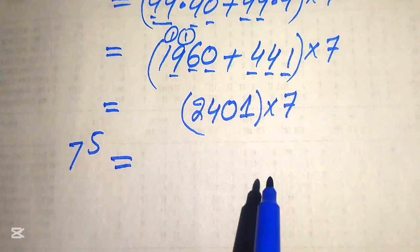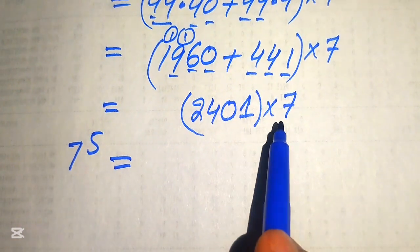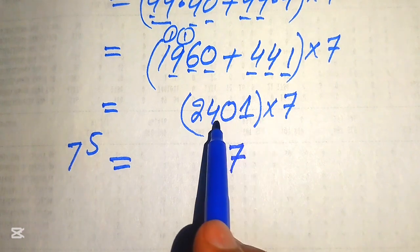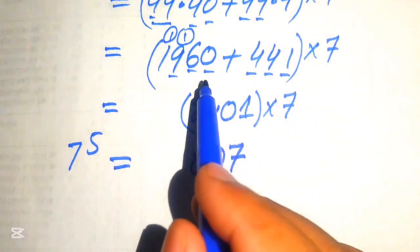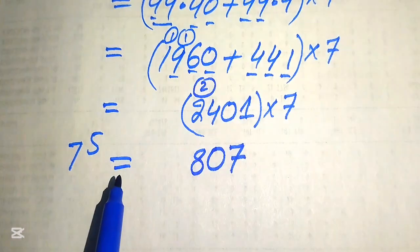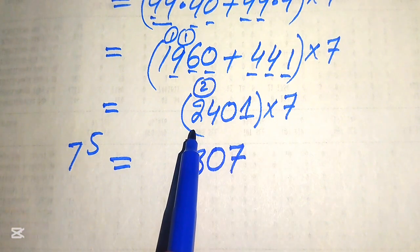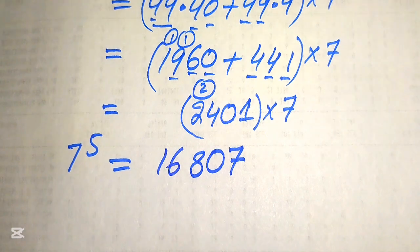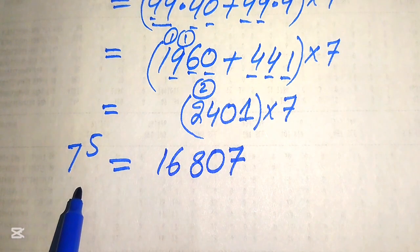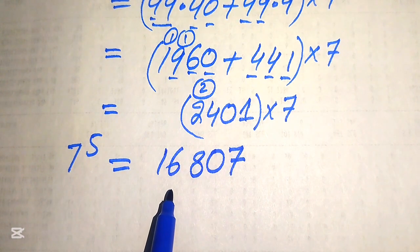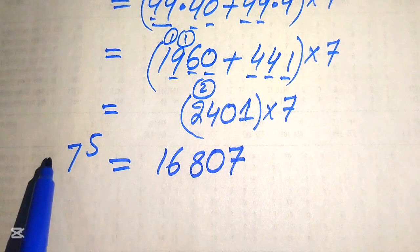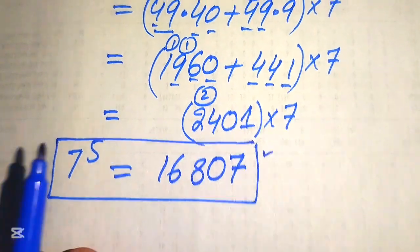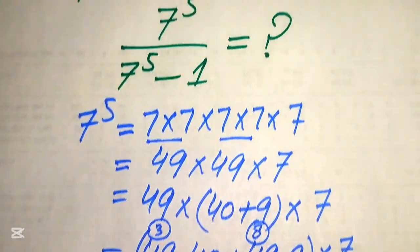So 7 to the power of 5 equals 2401 multiplied by 7. Multiplying: 7 ones are 7; 7 zeros are 0; 7 fours are 28, write 8 carry 2; 7 twos are 14, plus 2 becomes 16. So 7 to the power of 5 equals 16807. Now we move back and substitute this value into the given question statement.